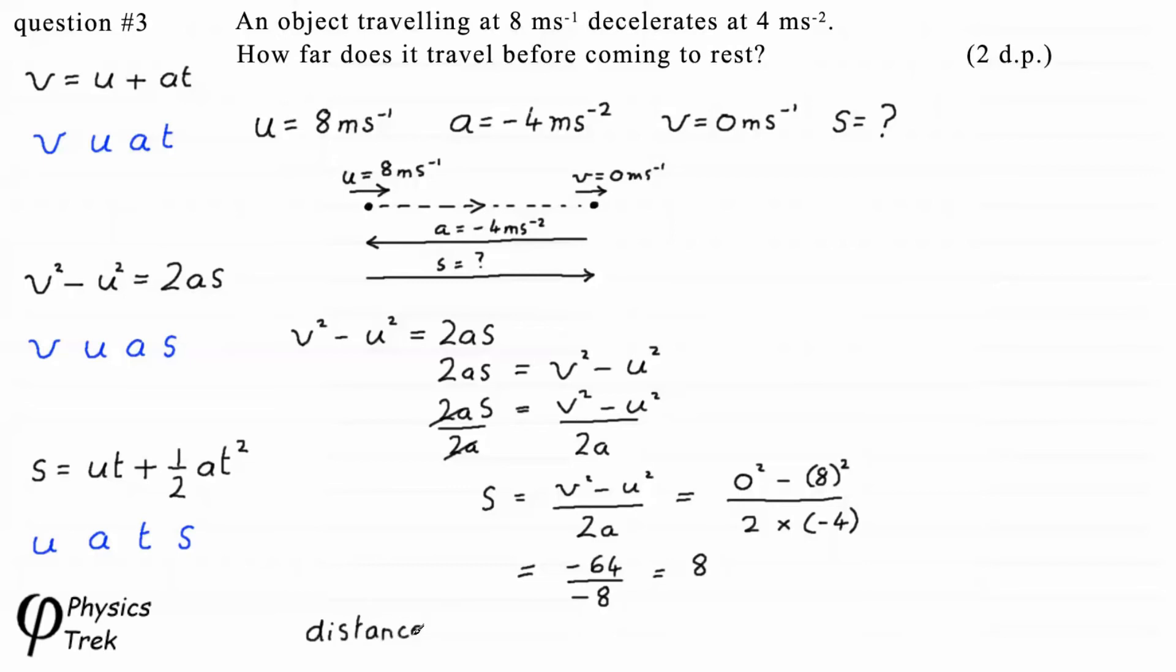Our distance travelled is therefore to two decimal places, 8.00 metres.